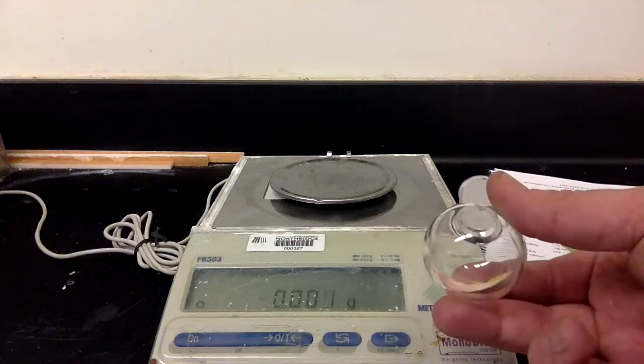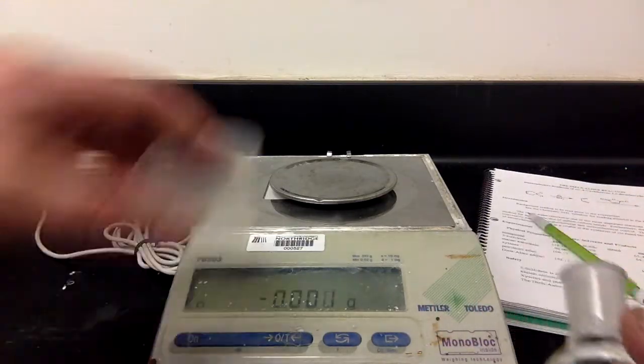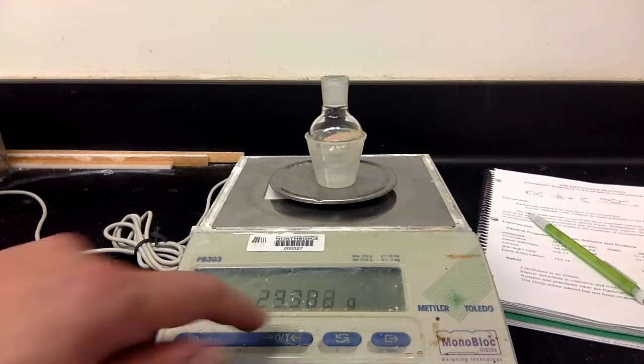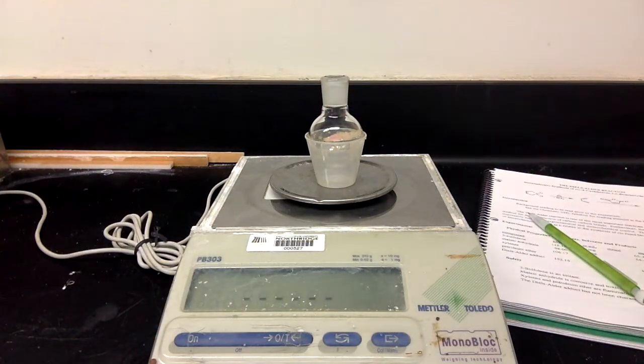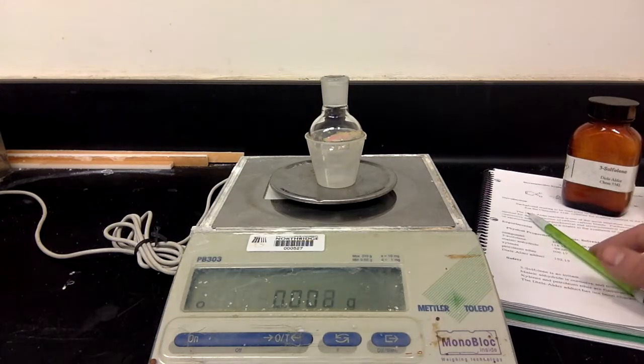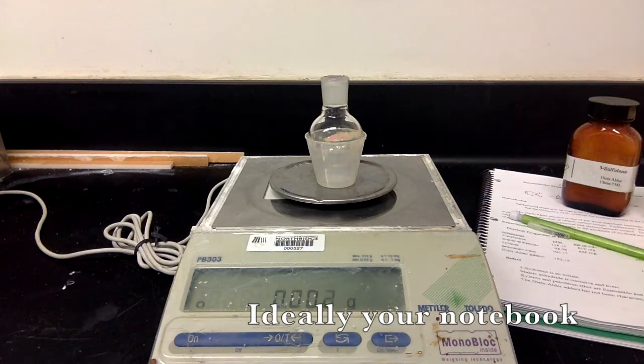So when you're making a measurement, you probably want to measure directly into your round-bottom flask. To do that, the best thing you can do is grab yourself one of these little cups, your weigh cups, and use that to hold up the round-bottom. Go ahead and zero the scale. Make sure you have what you need with you: 3-sulfolene, maleic anhydride, a book which tells you what you want, and a place to write of exactly the measurements you'll take.